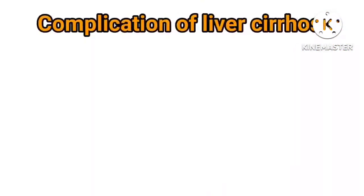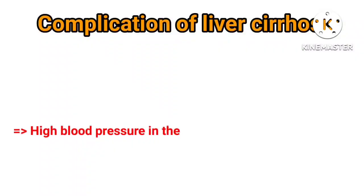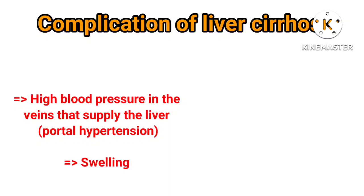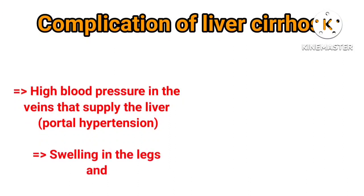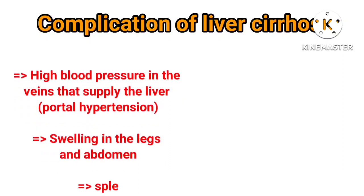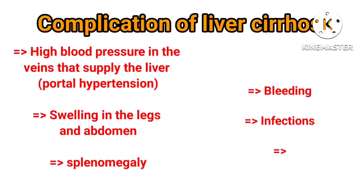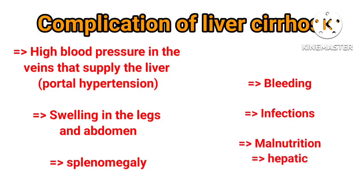Complications of liver cirrhosis include high blood pressure in the veins that supply the liver, known as portal hypertension, swelling in the legs and abdomen, splenomegaly, bleeding, infections, malnutrition, hepatic encephalopathy, and jaundice.